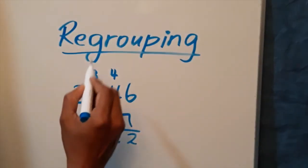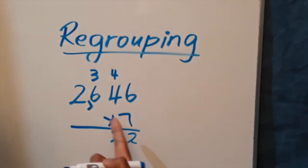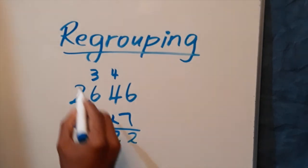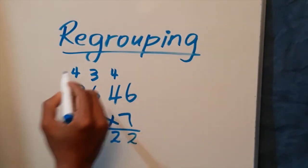Seven times 6 is 42, 42 plus 3, when you regroup, is 45, with the 5 in the hundreds place and the 4 over the thousands place.